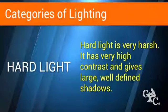Hard light appears small but is very harsh, like the sun. It has very high contrast, that is, it gives large shadows. It reveals texture though, if shown at the right angle. Some of the best lighting comes from a combination of these categories. A good time to shoot outdoors is during what is called the magic hour, which is 30 minutes before and after sunset.